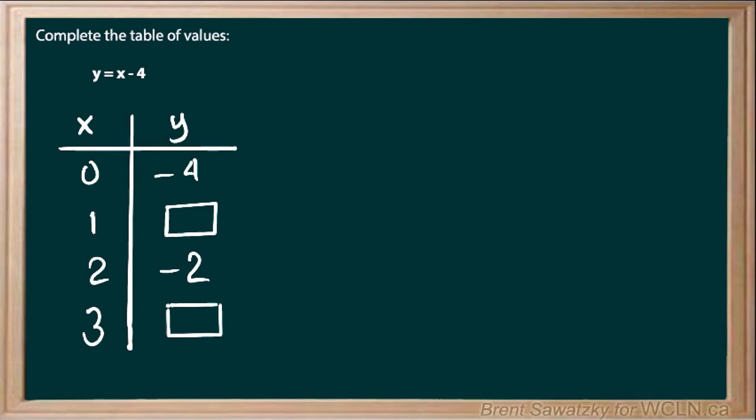Okay, so we're filling in a table of values based on our relationship, in this case being y equals x minus 4. We know all the x values that are given to us here, and we're to determine the y values where two of the y values are already given.